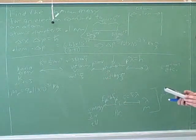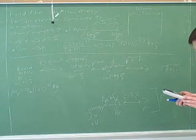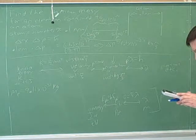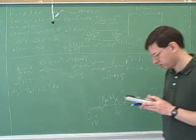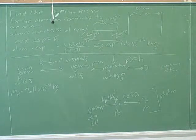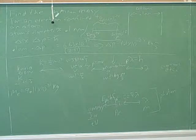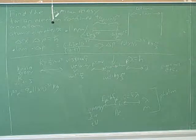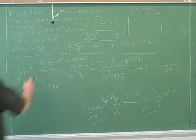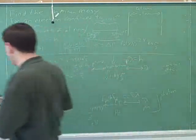And then we can square that, times it by the mass, to get the kinetic energy. It's good that you remember the one-half — a lot of people forget the one-half in the kinetic energy formula.